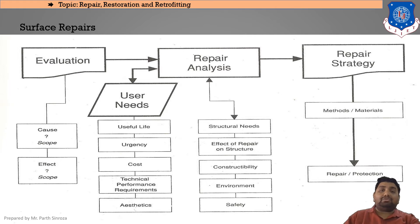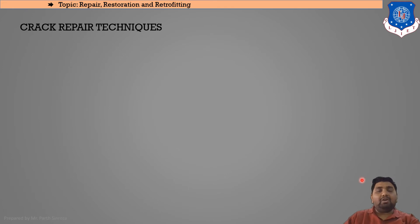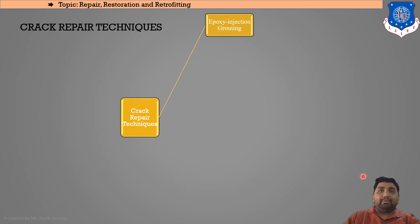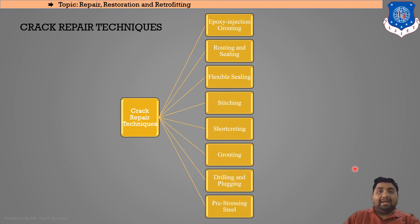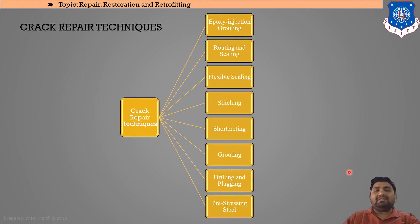Crack repair techniques include: epoxy injection grouting, routing and sealing, flexible sealing, stitching, shotcreting, grouting, drilling and plugging, and pre-stressing steel. These are the crack repair techniques frequently asked in examinations — write a short note on crack repair techniques, or list and explain one or two in detail.